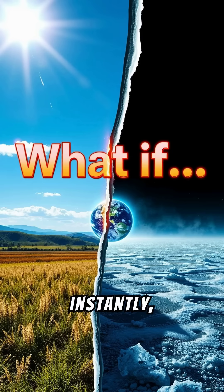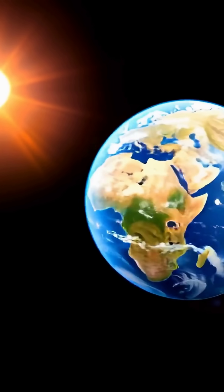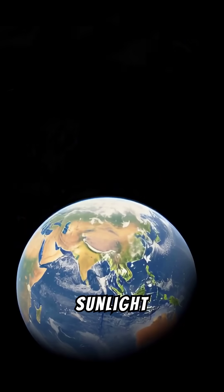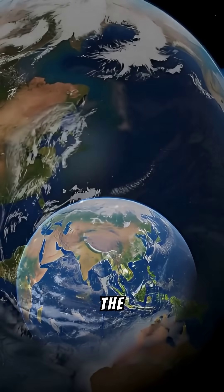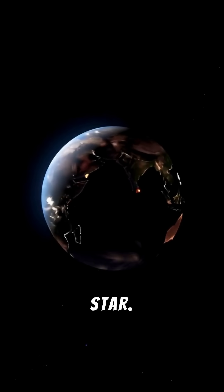If the sun were to shut off instantly, the first eight minutes on Earth would be absolutely normal. That's because sunlight takes exactly that long to travel the 150 million kilometers that separate us from our star.